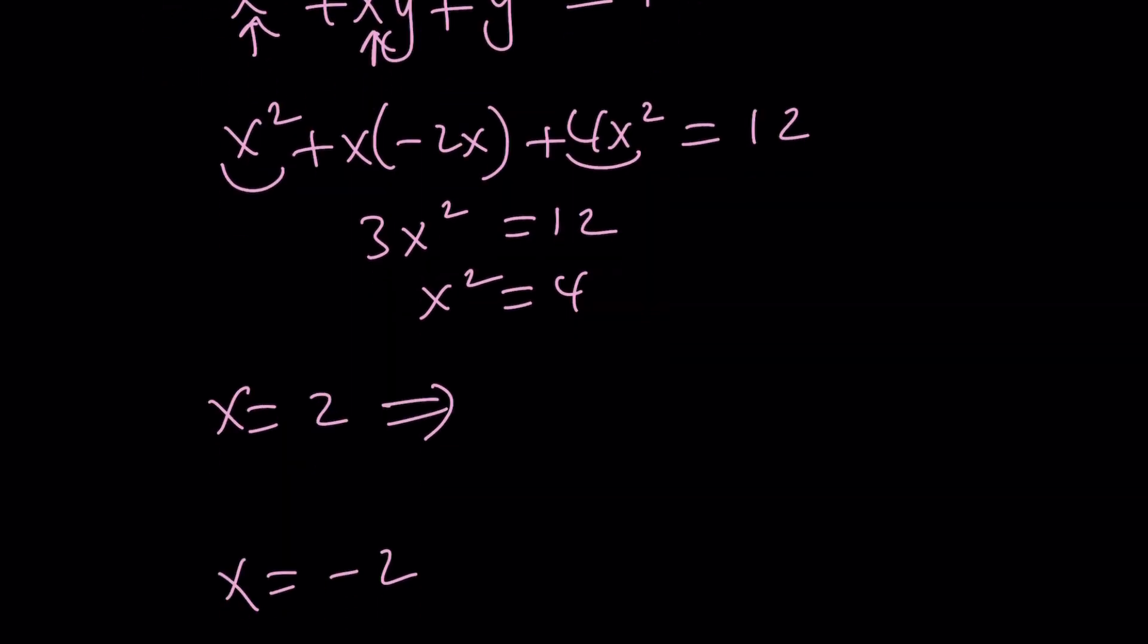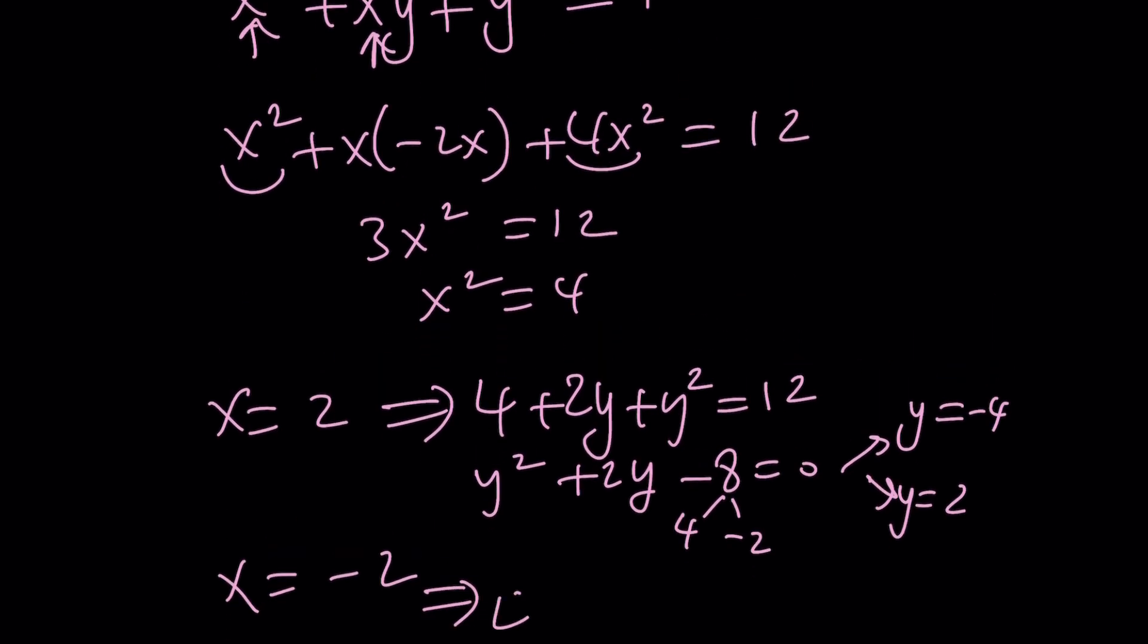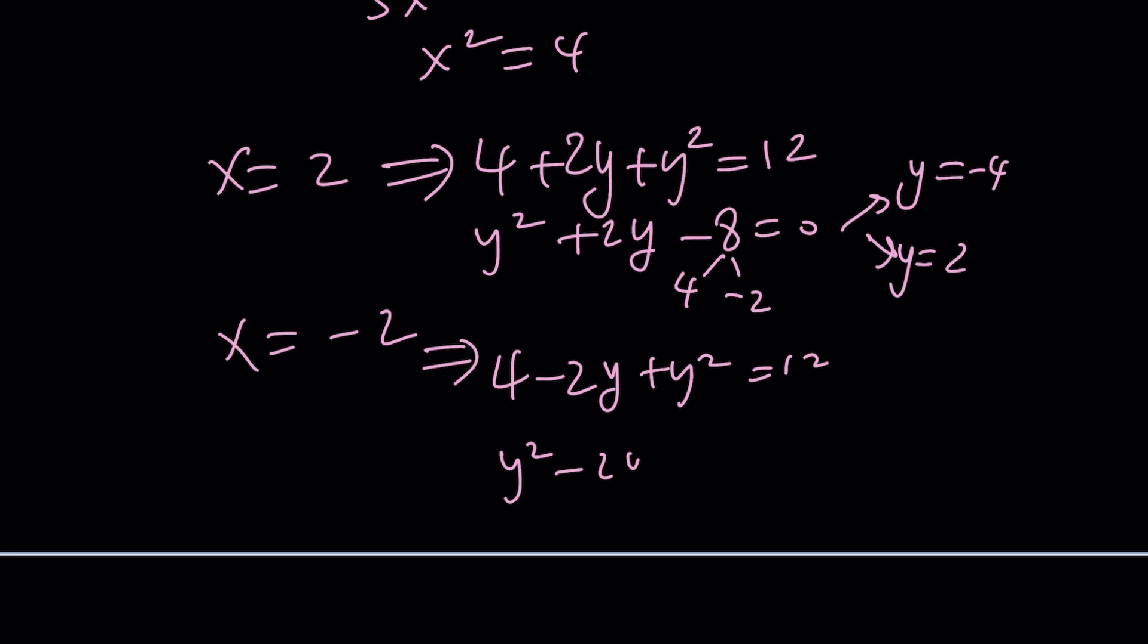And then y² + 2y - 8 = 0. Now if you factor this into 4 and -2, you're going to get y = -4 and y = 2 from here. If you plug in x = -2, you're going to get 4 again, but this time you're going to get -2y + y² = 12, and this gives us y² - 2y - 8 = 0. This can be factored as -4 and 2. From here, y = 4 and y = -2.